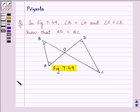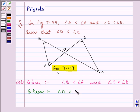So let us start with our solution. Angle B is less than angle A and angle C is less than angle D. This is given to us in the question. We need to prove that AD is less than BC. Let us start with our proof.